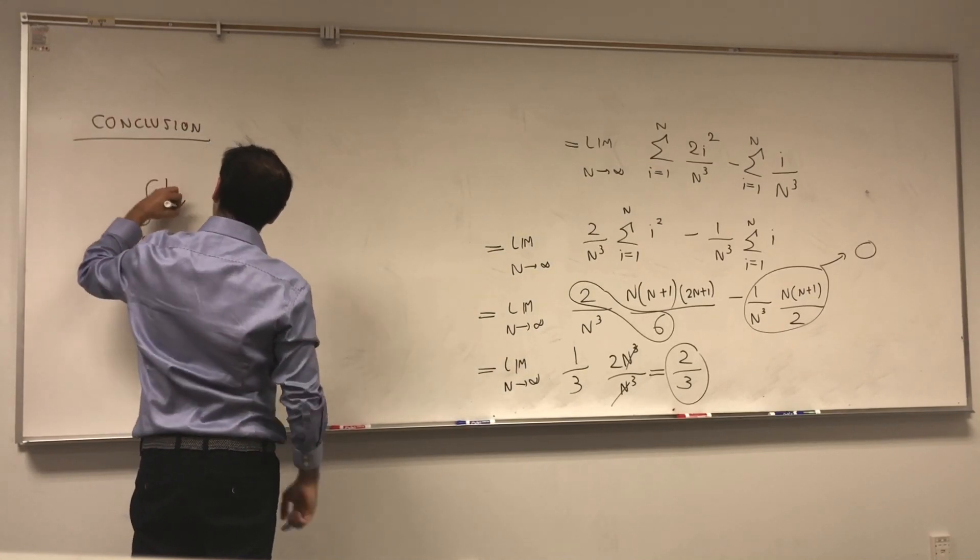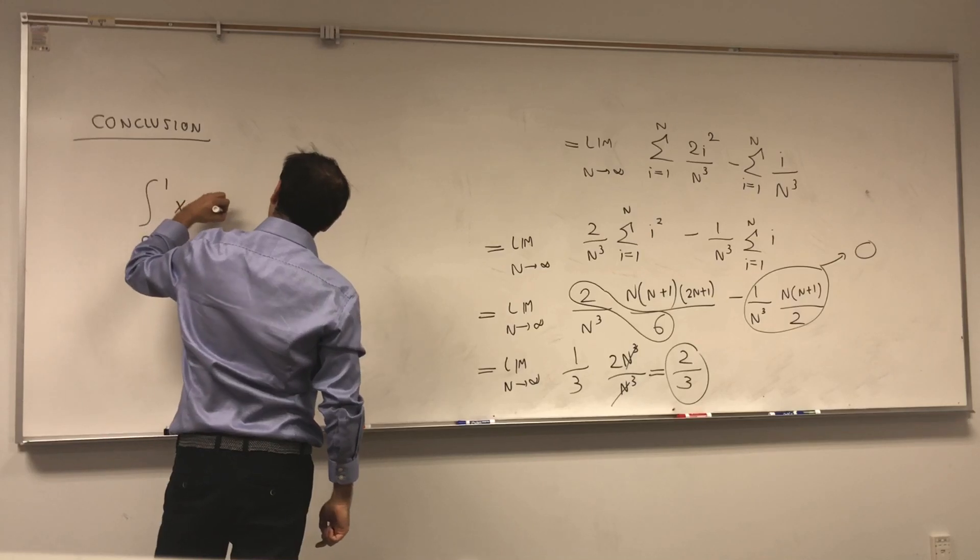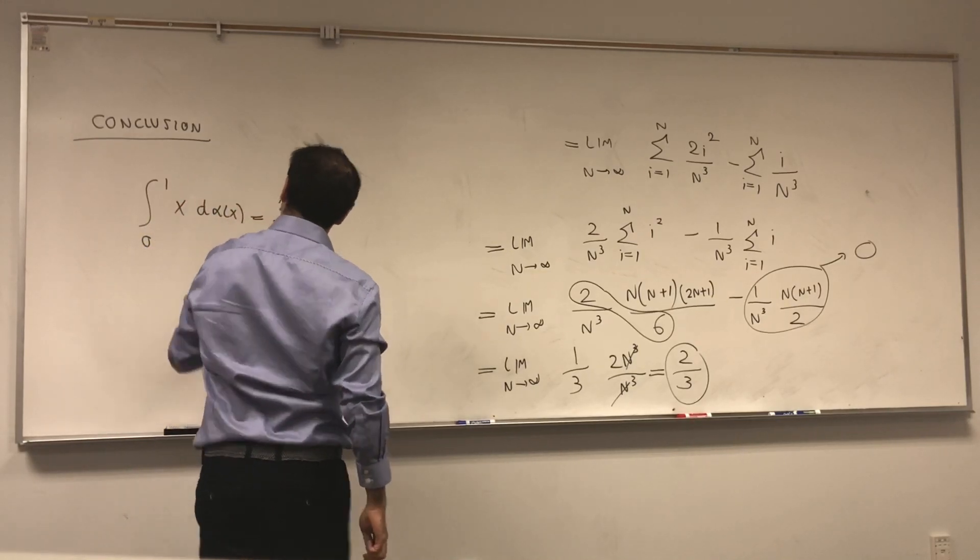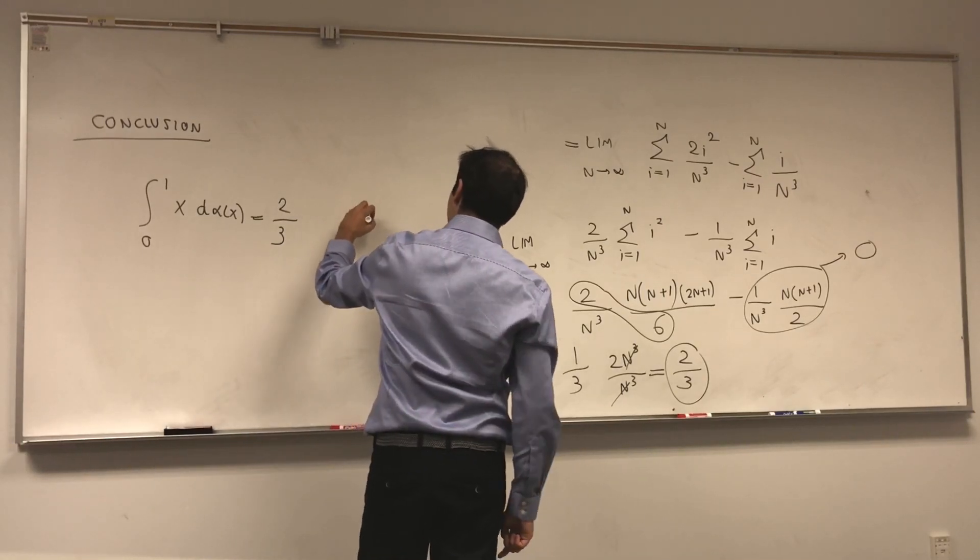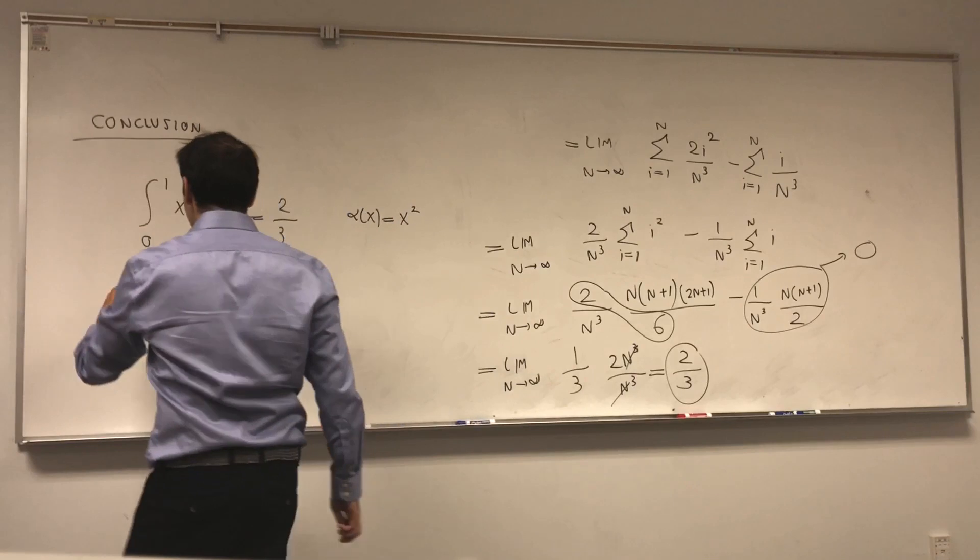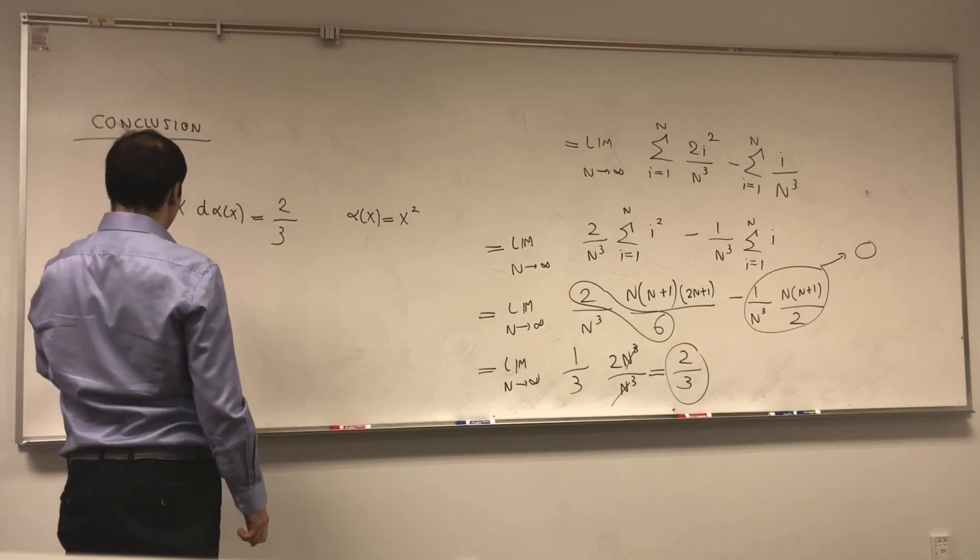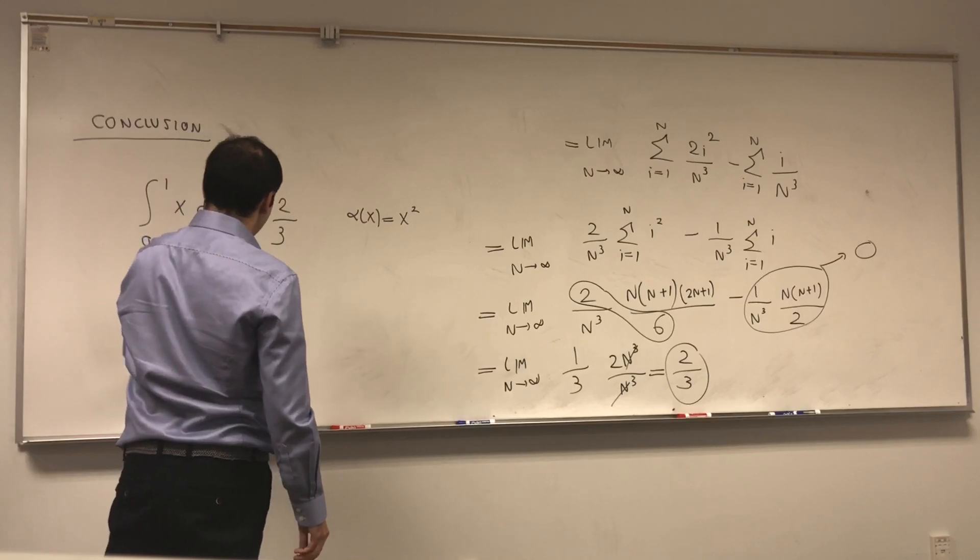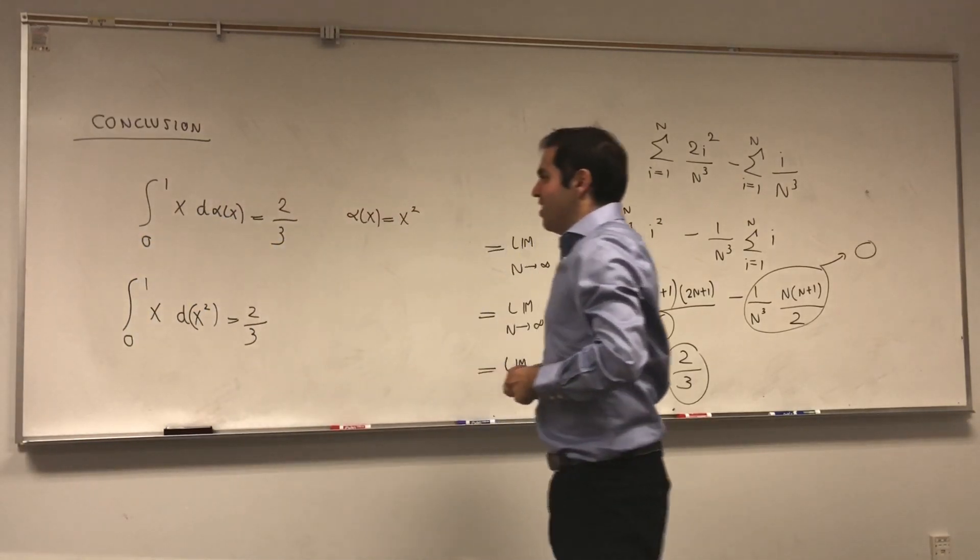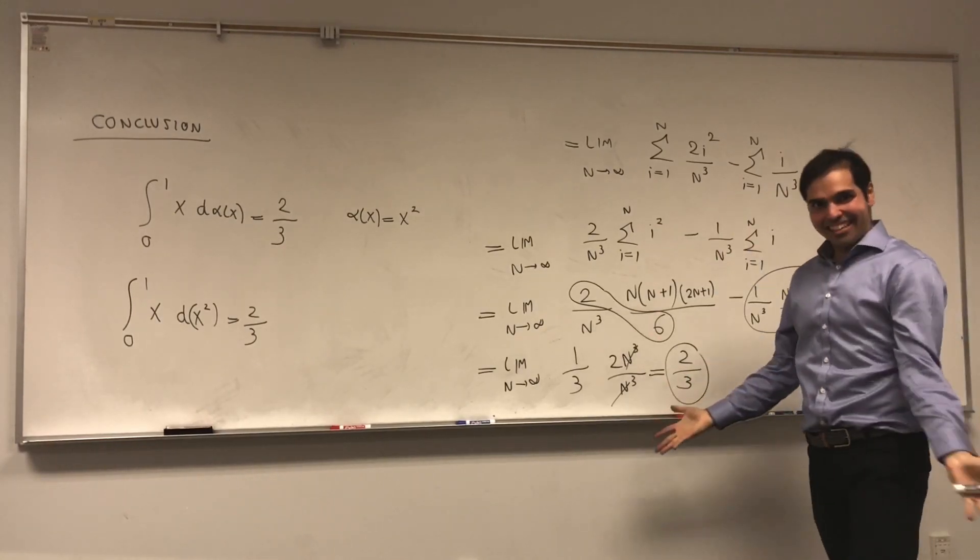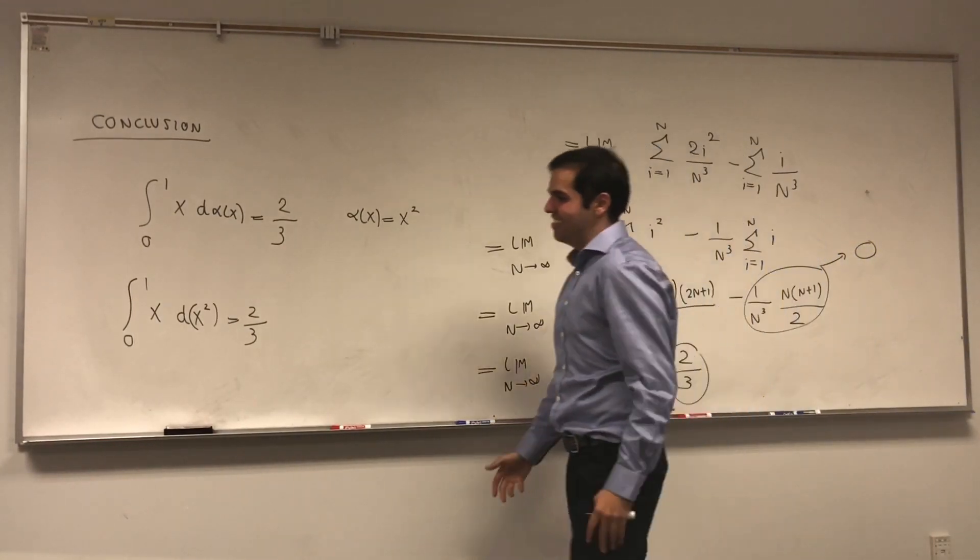So we get that the Stieltjes integral here is 2 thirds. The integral from 0 to 1 of x d alpha x is 2 thirds here. Alpha of x is x squared. And some people derive it as follows. Integral from 0 to 1 of x d(x squared) equals 2 thirds.